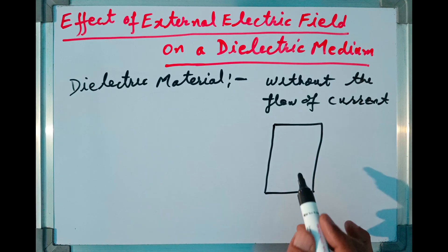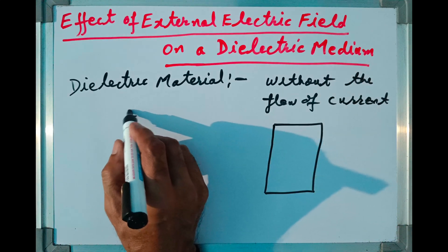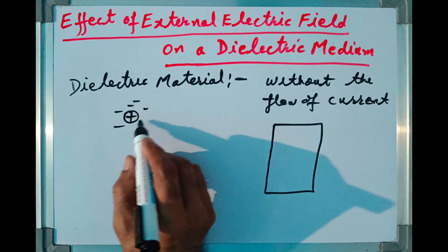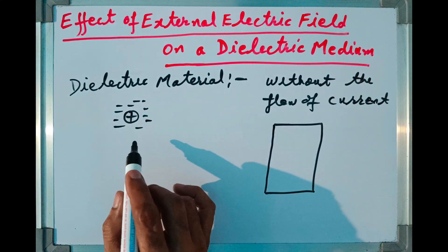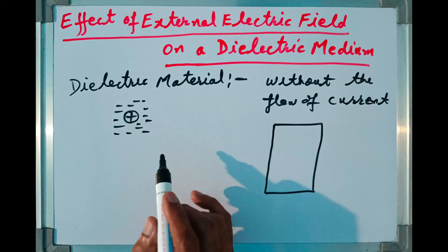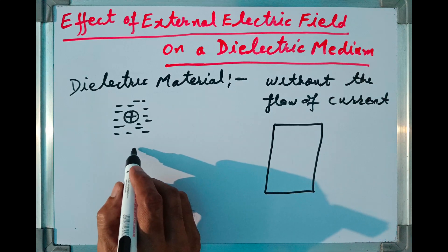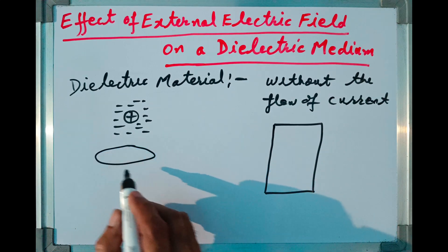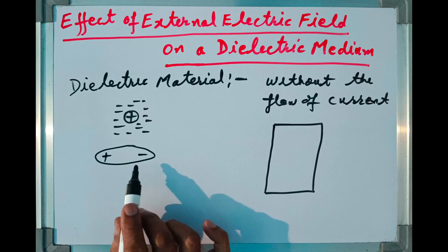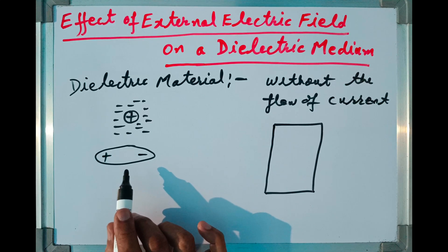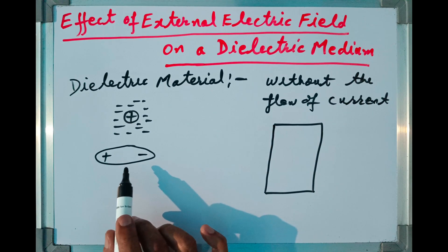Now everything is made of molecules. Inside a molecule, there are some positive charges and some negative charges surrounding it. It has been observed in general that in a molecule, the center of positive charges does not coincide with the center of negative charges. So a molecule behaves as if the center of positive charges and the center of negative charges are a little bit separated from each other — this is called an electric dipole. So each molecule in a material behaves as an electric dipole.